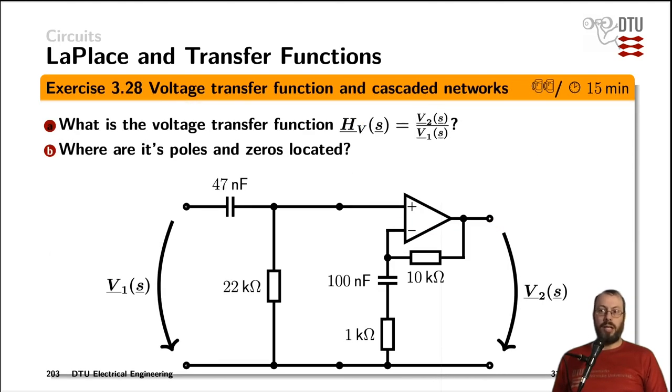And finally, using a cascaded connection of a passive network formed by the capacitor and the resistor and an active circuit. What is the voltage transfer function across those two? And where are the poles and the zeros in this circuit?